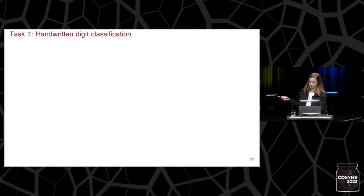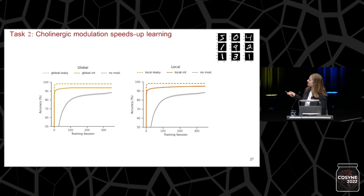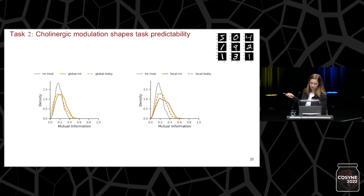We replicated these findings across different tasks and then moved on to a more standard machine learning task where the network learns to classify 10 different digits. Looking first at speed of learning, both adaptive methods lead to faster learning in both global and local modulation conditions.